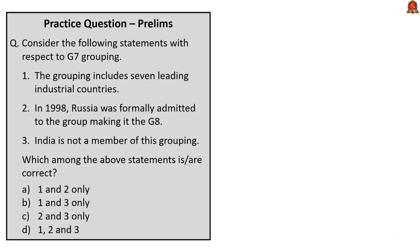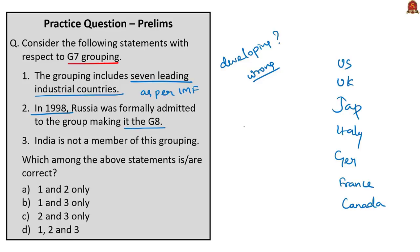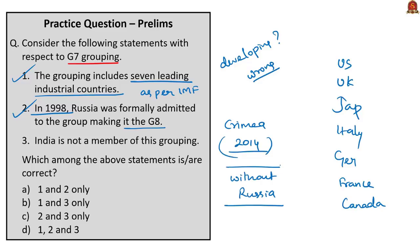This question is with respect to the G7 grouping. The first statement: the grouping includes seven leading industrial countries — correct. The seven countries are the US, UK, Japan, Italy, Germany, France, and Canada. The second statement: in 1998, Russia was formally admitted to the group making it the G8 — correct. However, after the Russian annexation of Crimea, the G7 nations decided in 2014 to meet without Russia.